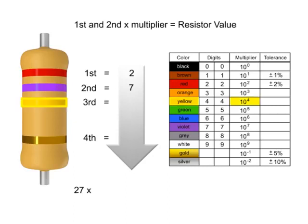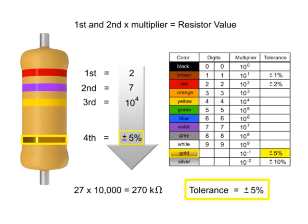The third band is yellow, so we multiply the first two numbers by 10 to the fourth, or 10,000. Thus, the value of this resistor is 270 kilo-ohms with a tolerance of plus or minus 5%.